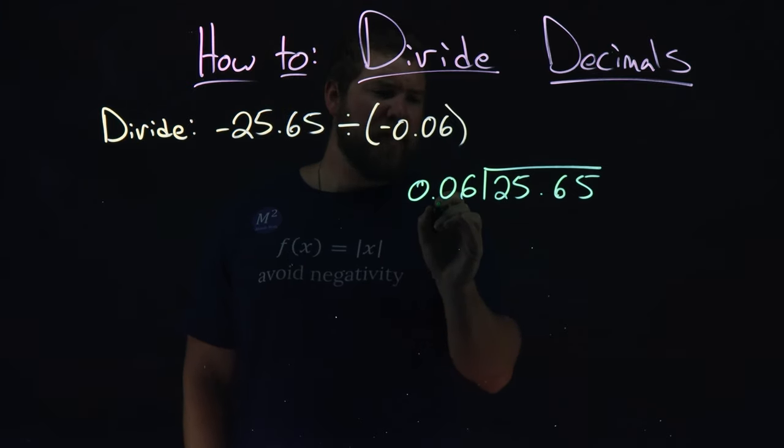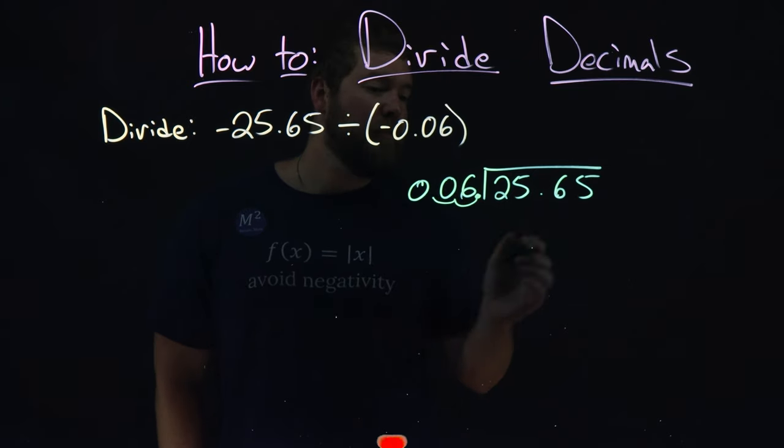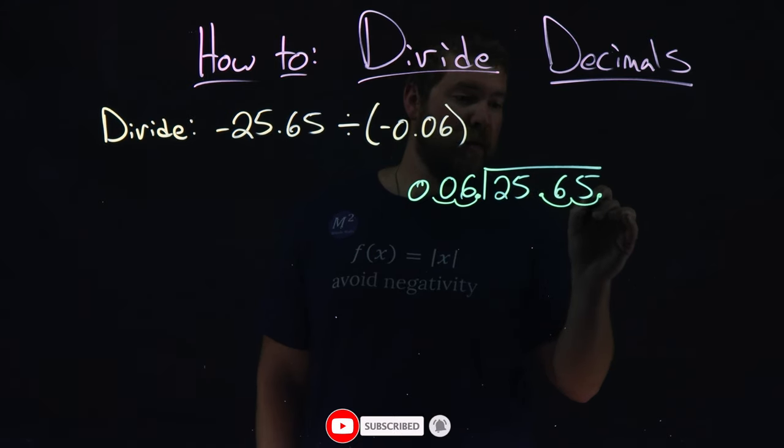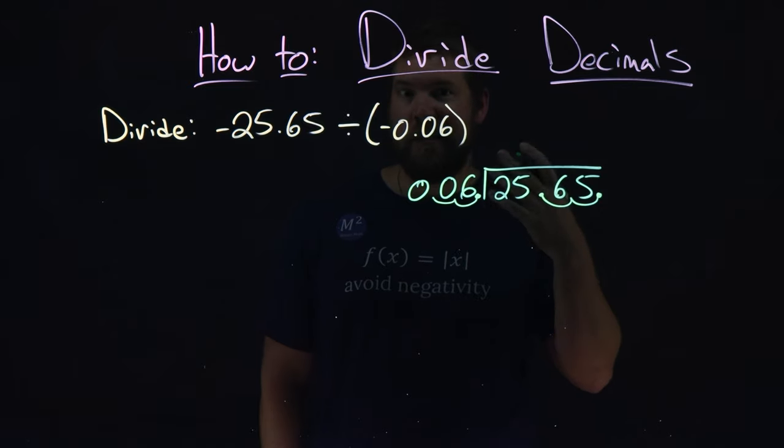But what we can do here is, I don't like dealing with decimals. So if you move this over two spots, 1, 2, this problem becomes the same as 6 going into 2,565.